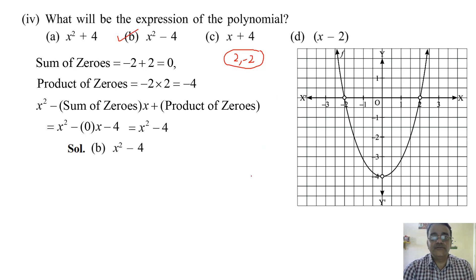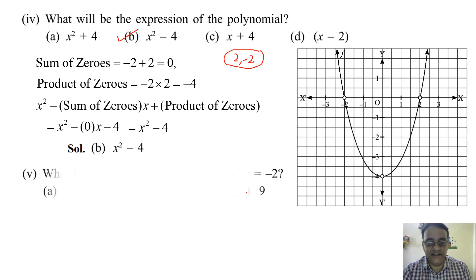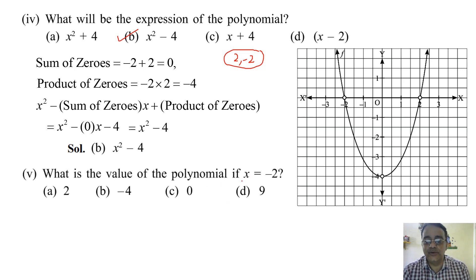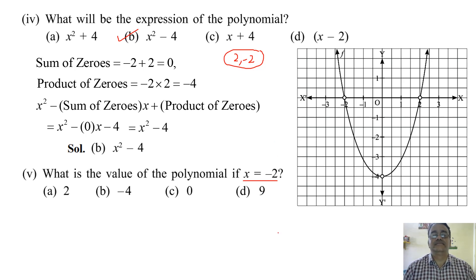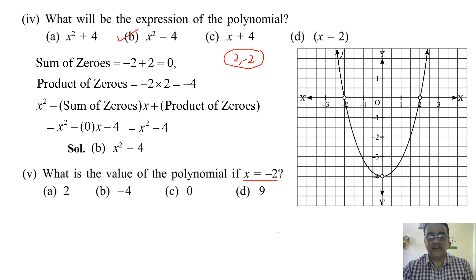What is the value of the polynomial if x equals minus 2? Since minus 2 is a zero, the polynomial value is zero. The answer is C.